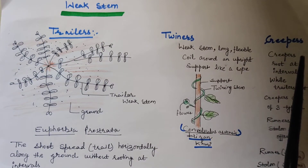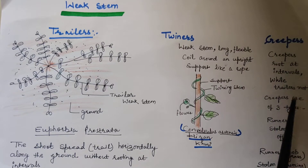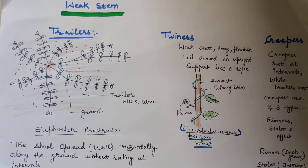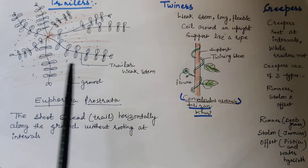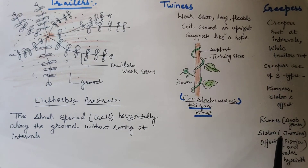Creepers are further divided into three types: runner, stolon, and offset. Runner example is doob grass. Stolon example is jasmine. Offset is present in water hyacinth, which is commonly called the terror of Bengal.